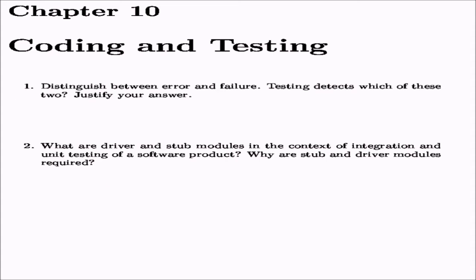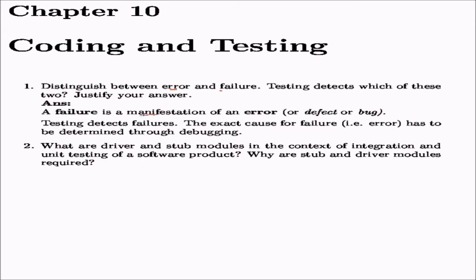The first question is: distinguish between error and failure, and testing detects which of these two? Failure is the manifestation of an error, defect, or bug. Failure is the result of an error, and testing detects the failure. The exact cause of the failure — the error — has to be determined through debugging. An error may be present but not necessarily cause a failure, though it always has a possibility of creating one.